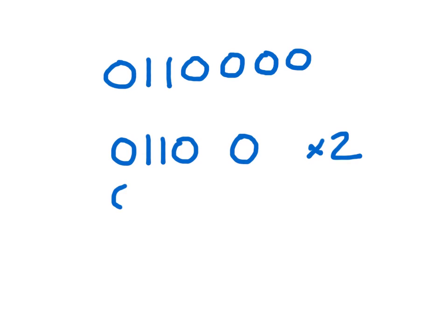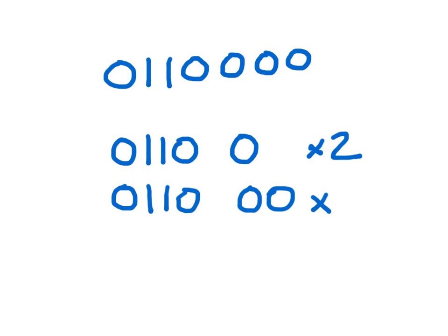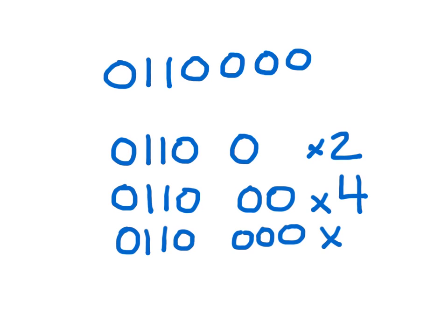If we add another 0, we have multiplied 12 times 2 to get 24. And if we add another 0, we will multiply that times 2, and so on. If you add one 0, you have multiplied it times 2. If you add two 0s, you have multiplied it times 4. And if you add three 0s, you have multiplied it times 8.